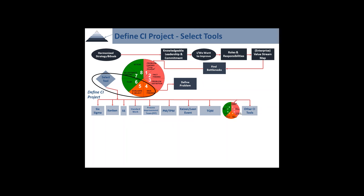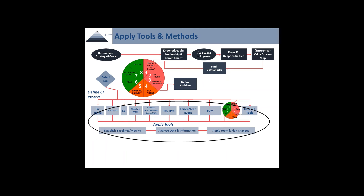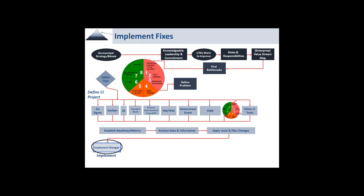After that, we start selecting the tools. As we define the project, we decide which tool or tools we're going to need — what's most appropriate. One of them could be the simplexity process itself. It could be Six Sigma, but we pick the right tool depending on what the problem actually is. Then we apply them, establish baselines, know what we're looking for, analyze data, apply the tools, and plan changes, which leads us into implementing the changes.